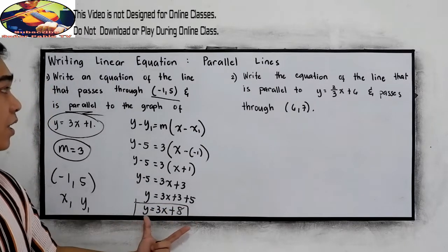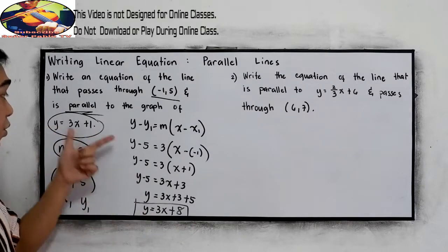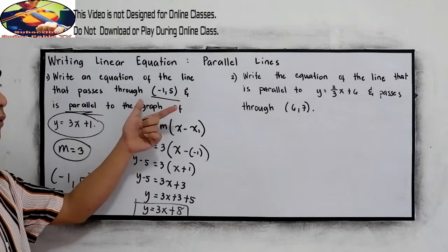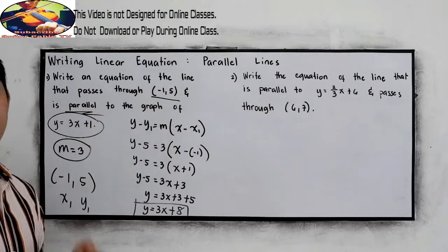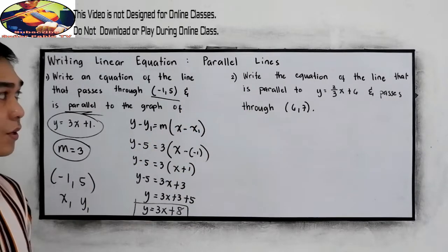This is now the equation of the line that is parallel to y is equal to 3x plus 1 and passes through negative 1 comma 5. Another example, number 2.